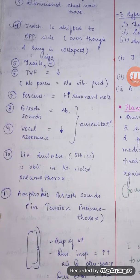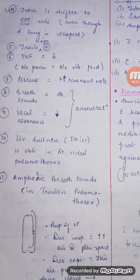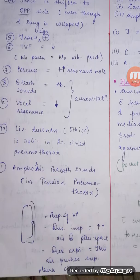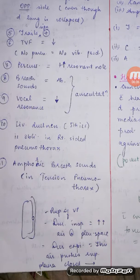Many people are confused about tracheal shift. Since the lung is collapsed in pneumothorax, some think the trachea shifts to the side of collapse. No — just like in pleural effusion, the trachea is deviated to the opposite side, whether it is fluid or air. So if pneumothorax is on the left, trachea deviates to the right.